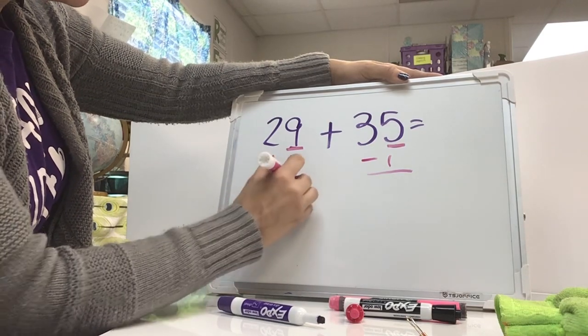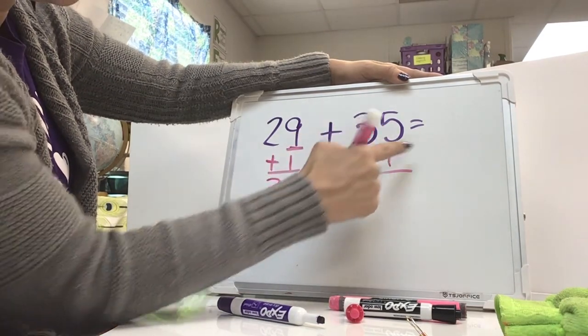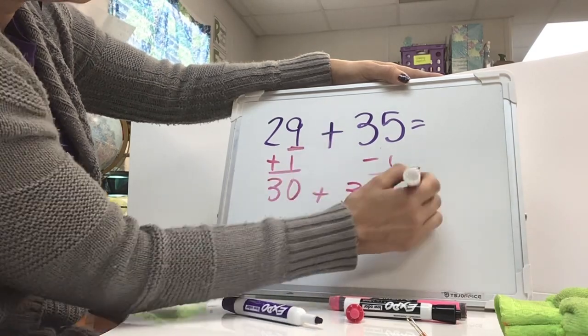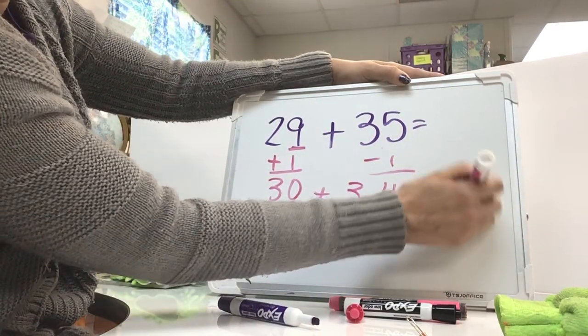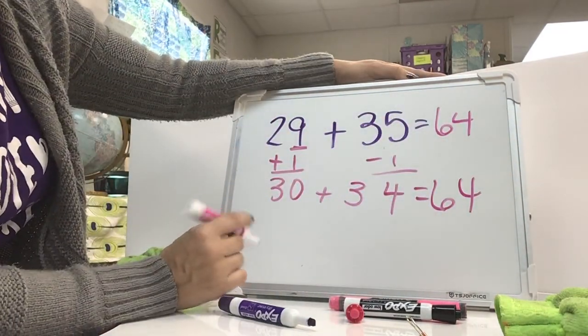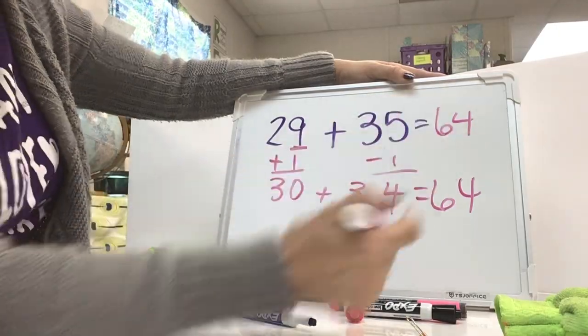29 plus 1 is 30. And 5 minus that 1 is 4. And bring down my 3. My new equation is 30 plus 34, which has a sum of 64. So the sum of 29 plus 35 is also 64.